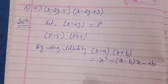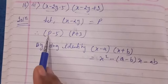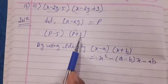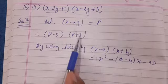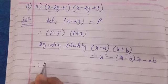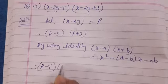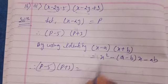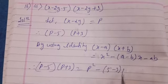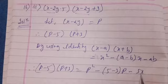So in place of x we will put P, in place of a we will put 5, and in place of b we will put 3. Therefore (P - 5)(P + 3) is P² minus (5 - 3)P minus 5 × 3.